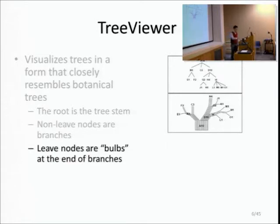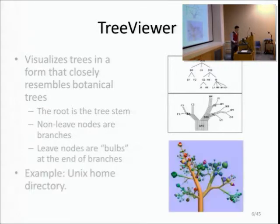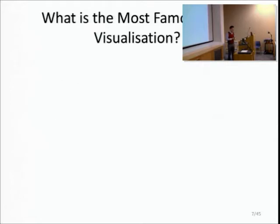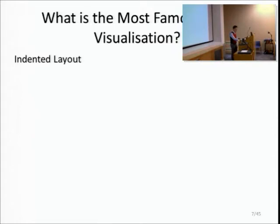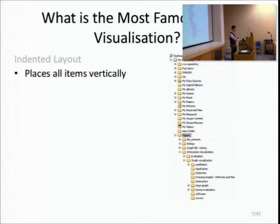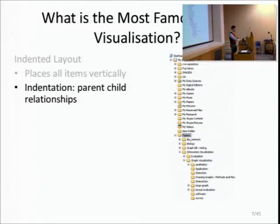The leaf nodes are bulbs at the end of the branches - very literally just like a tree. The next one is probably the most famous tree visualization. It's called the indented layout, which most people know as Windows Explorer. I'm sure you all know how Windows Explorer works. The limitation is it's relatively good when showing part of the tree, but it's not practical to expand all possible branches. If you try to expand all directories in Windows, you get a very long list, which is not ideal.